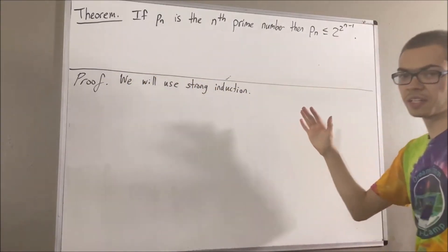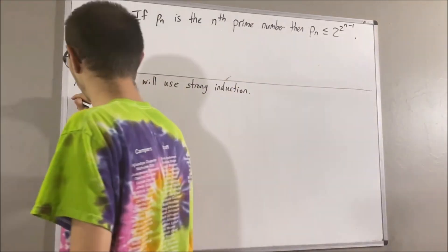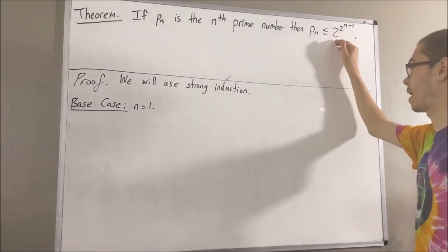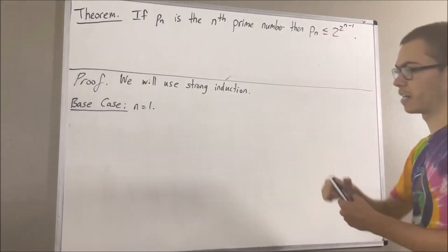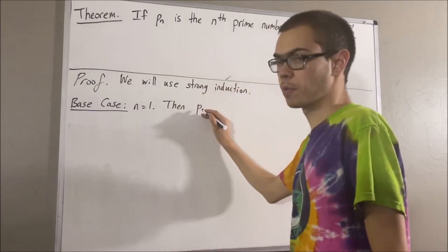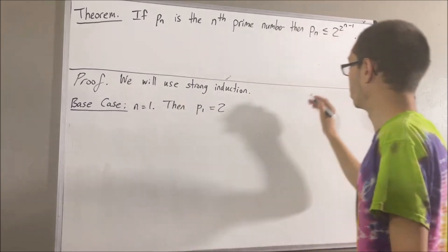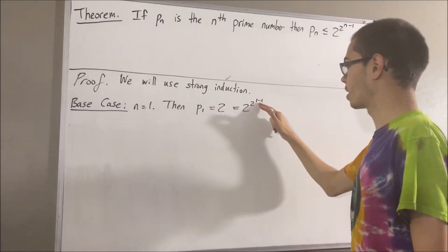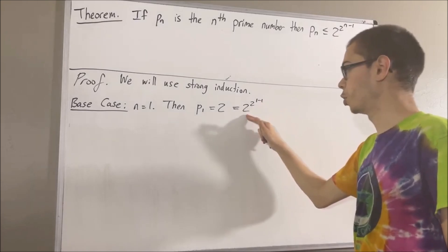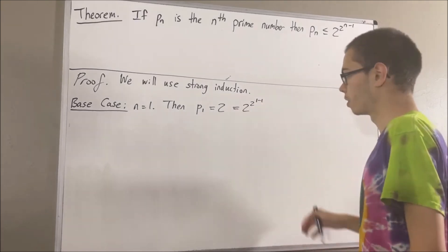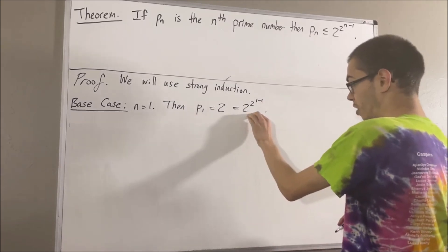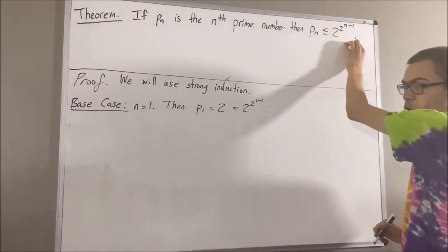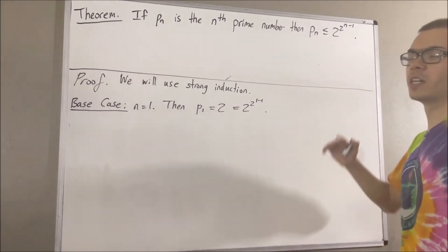Let's start with the base case, in which we prove that this is true for n equals 1. We're trying to prove that P1 is less than or equal to 2 to the power of 2 to the 1 minus 1. We know that the first prime number is 2, and 2 is equal to 2 to the power of 2 to the 1 minus 1, because 1 minus 1 is 0, 2 to the 0 is 1, and 2 to the power of 1 is equal to 2. So we have shown that P1 equals this, so P1 is less than or equal to this, and therefore this is true for n equals 1. This completes the base case.